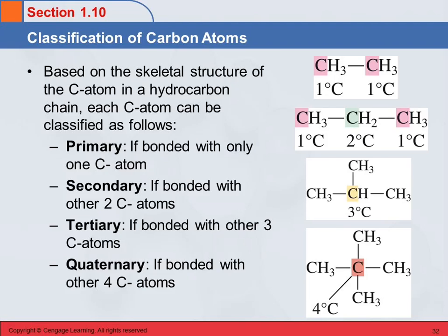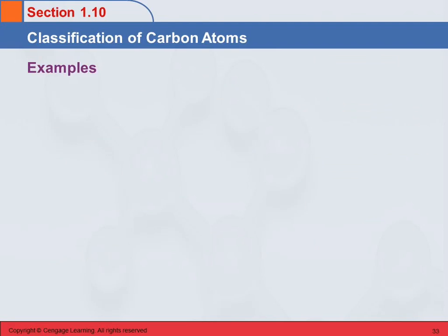So in this bottom example, we have this carbon is bonded to four other carbon atoms. It's got its four bonds with carbons, and it doesn't have any hydrogens. Any questions about that?